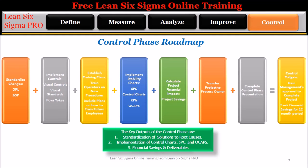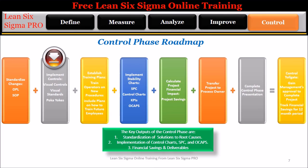The Control Roadmap is a summary of all of the steps required to complete the control phase. Step 1: Standardize changes — the team will create one point lessons, OPLs, and update or create standard operating procedures, SOPs. Step 2: Implement controls — create visual controls, visual standards, and poka-yokes.